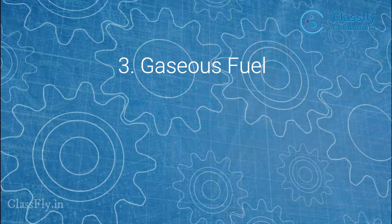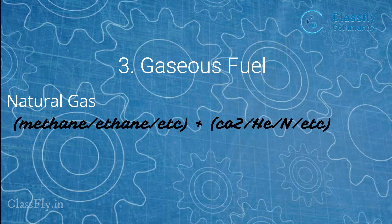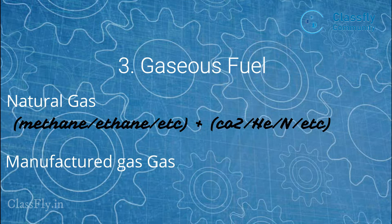Moving on to gaseous fuels — they are fuels available in the gaseous form. Natural gas is a composition of hydrocarbon gases such as methane, ethane, and gases such as carbon dioxide, helium, and nitrogen. The next type is manufactured gas, which is a mixture of solid and liquid fuels. Some examples are coal gas and producer gas, and they are used as industrial power sources.